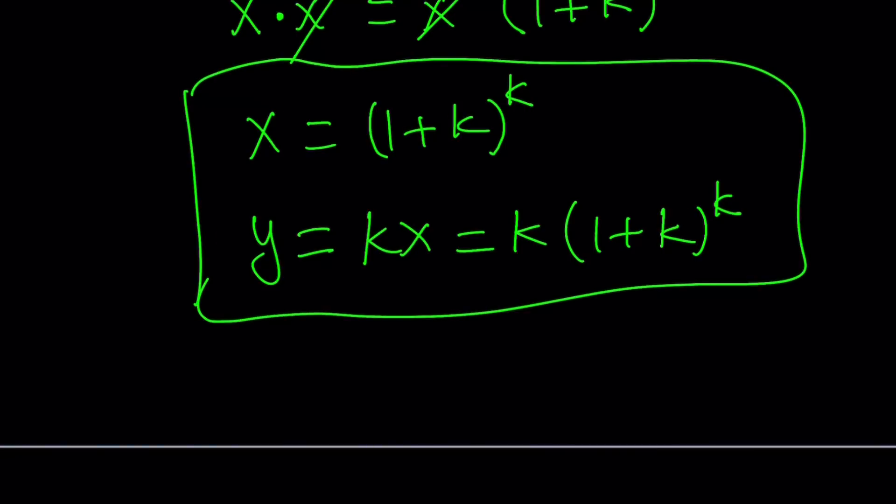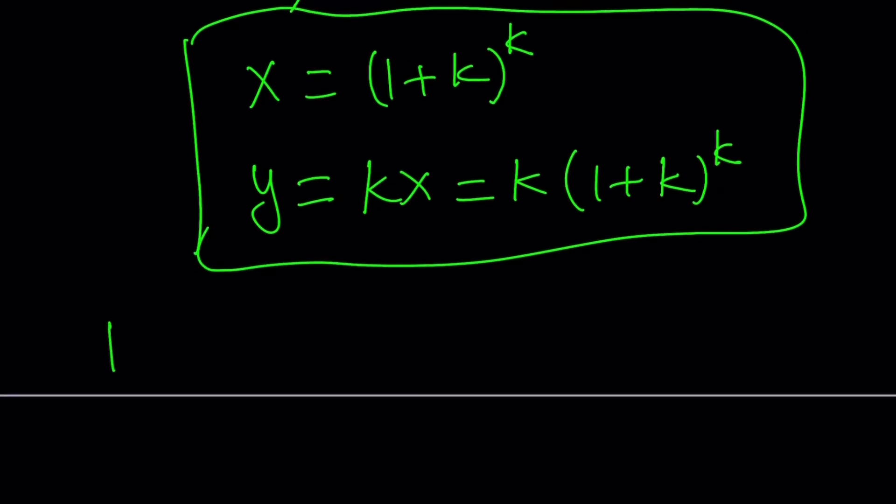Next we're going to replace k with a couple different values to see what it looks like and then I'm going to show you the graph. Let's replace k with one which is a simpler form. If k is one that also means y equals x. So you expect to get the same values. We're going to get two for x and two for y. So two comma two is going to be a solution. There are infinitely many solutions for every value of k.